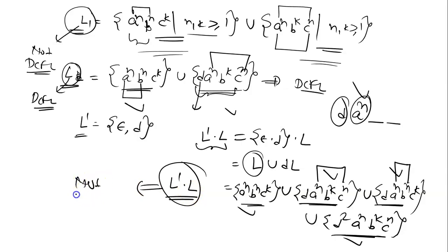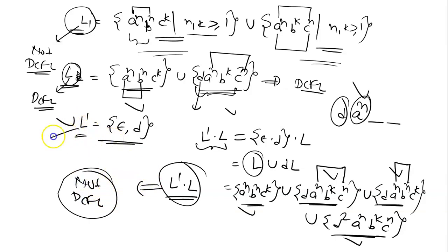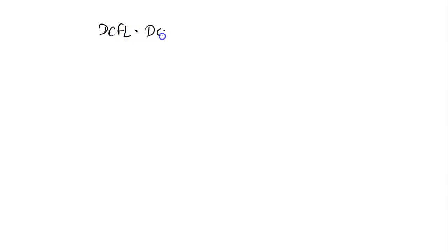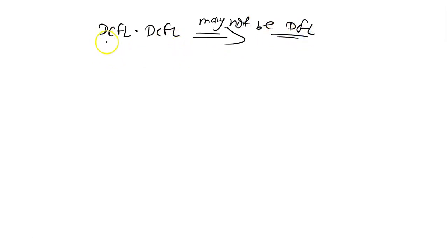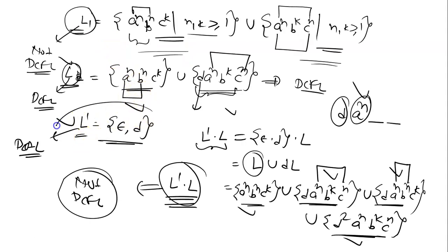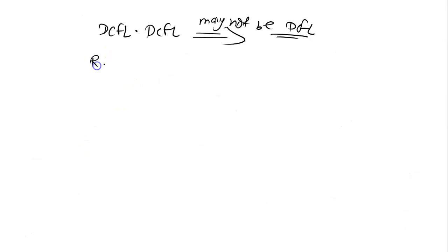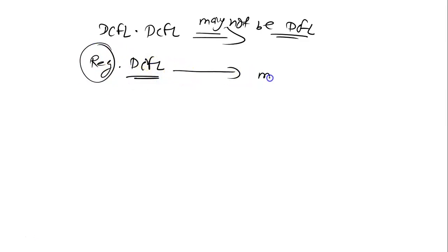From this we can see that L' is a finite language, and every finite language is regular, so L' is also DCFL. L is also DCFL. But their concatenation is not DCFL. So the first result is: DCFL concatenated with DCFL may not be DCFL. Also, since L' is a regular language, we can also say that a regular language concatenated with a DCFL language may not be DCFL.